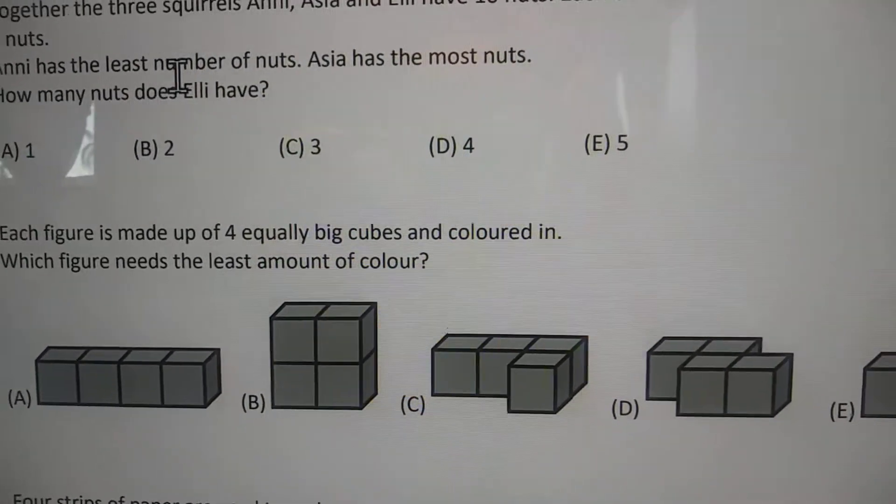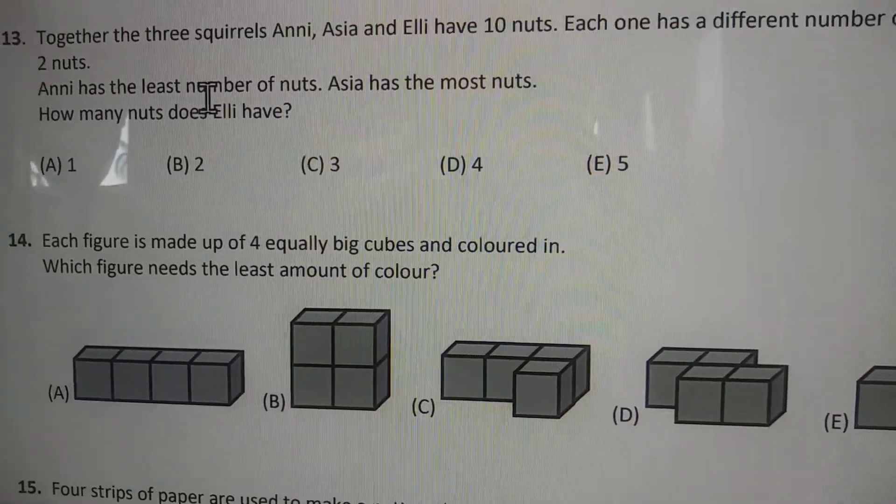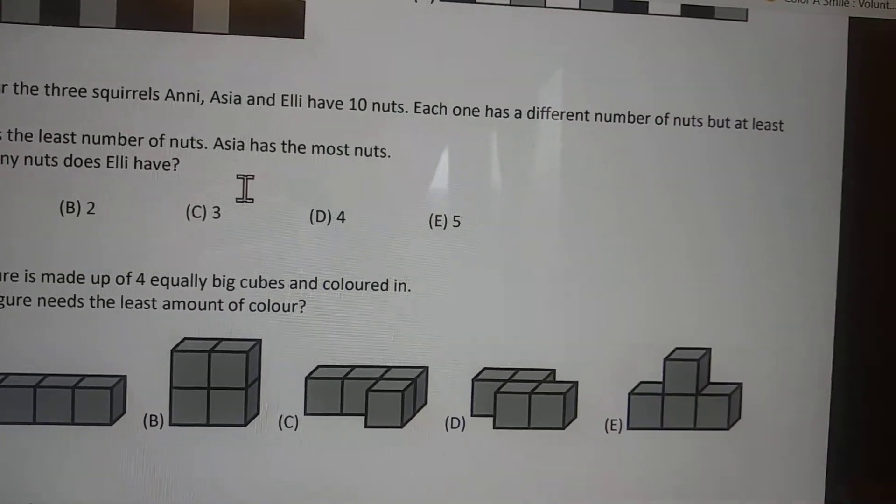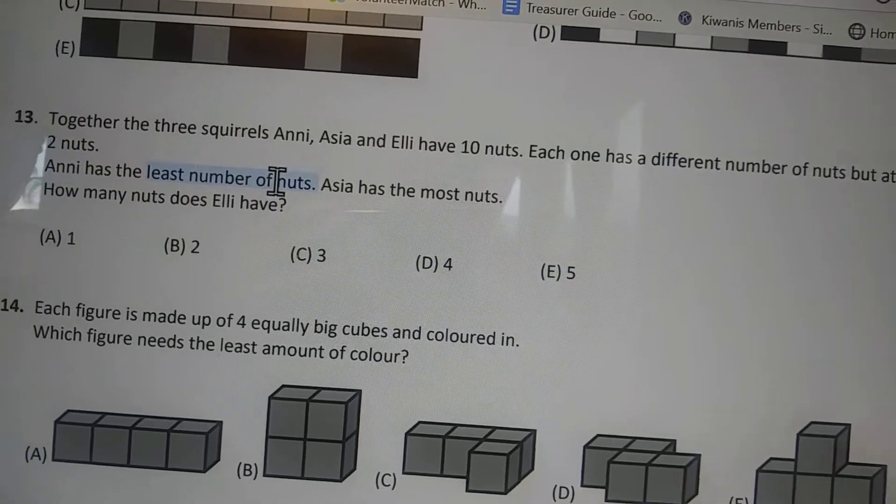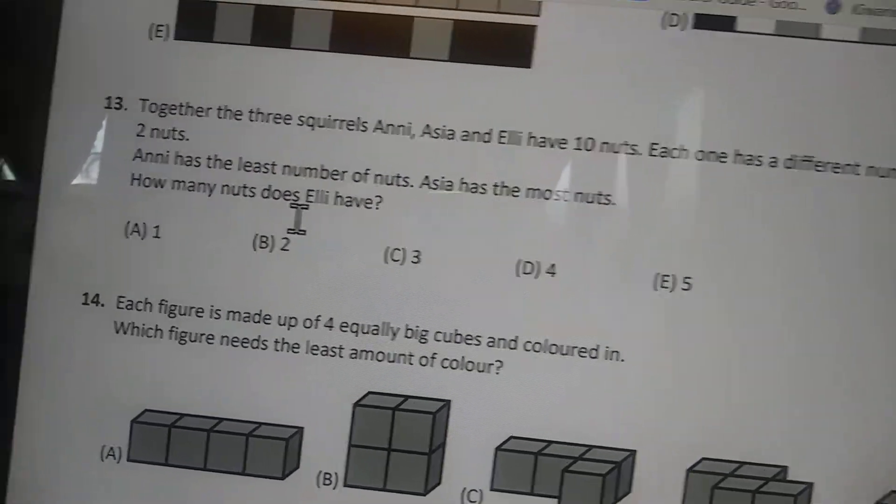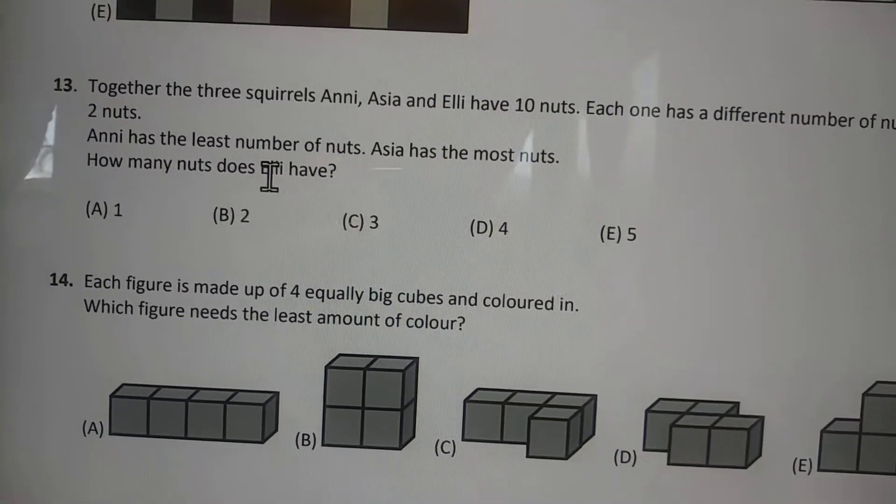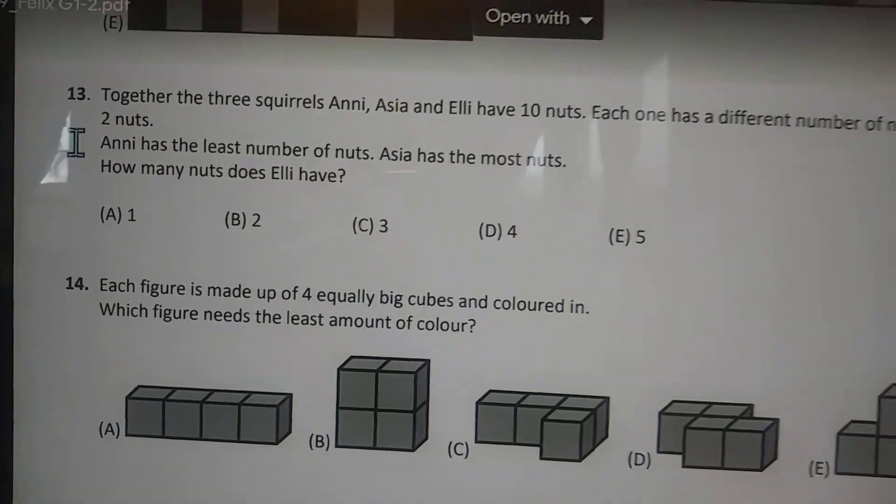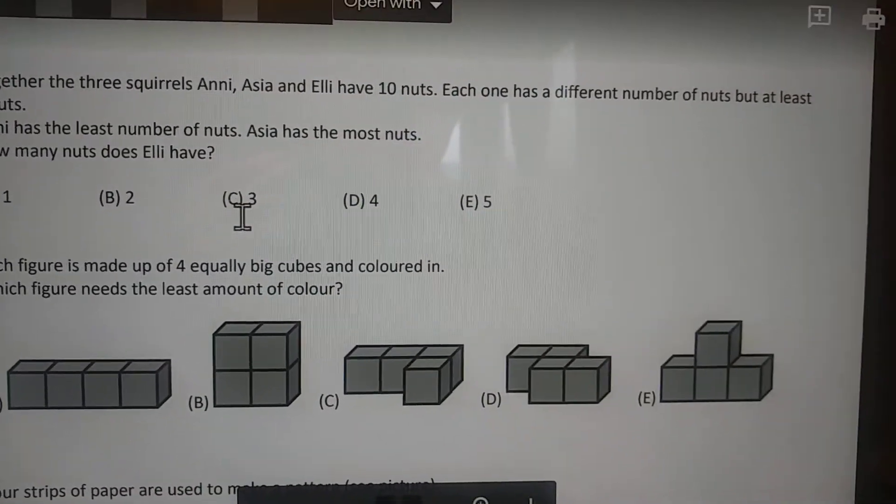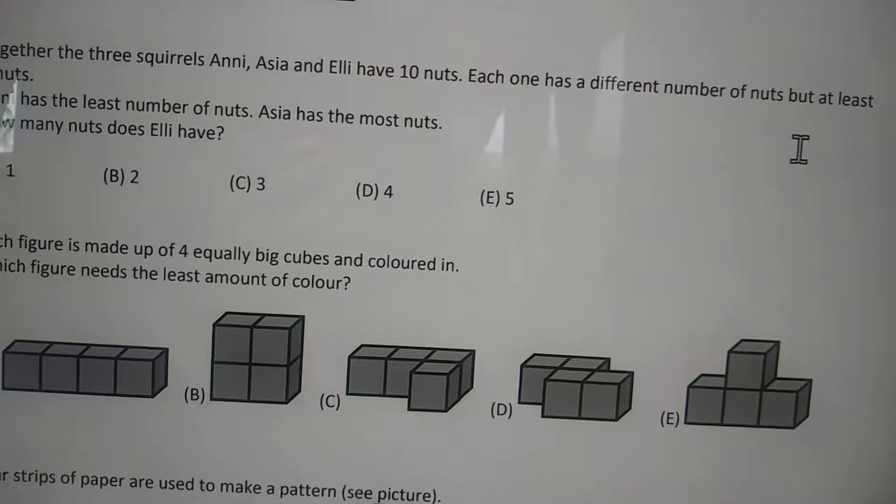We're looking for how many nuts Eli has. Eli can't have one because she has to have at least two. What about answer choice B? If Eli has two nuts, then Annie, who has the least, would have to have two or one. It can't be one because they all have at least two, and it can't be two because they all have different numbers. So that's wrong.